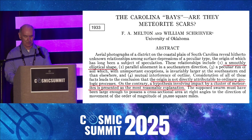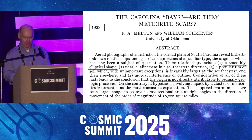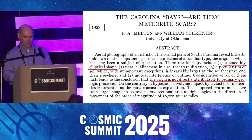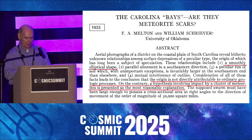In 1933, Melton and Shriver wondered whether the Carolina Bays could be meteorite scars. They noted that the bays have a smoothly elliptical shape, parallel alignment, a rim of soil in the southeastern end, and the bays can overlap while maintaining their elliptical geometry. These authors concluded that the origin of the bays is not directly attributable to ordinary geological processes, and that the origin of the Carolina Bays from meteorite impacts was the most logical explanation.